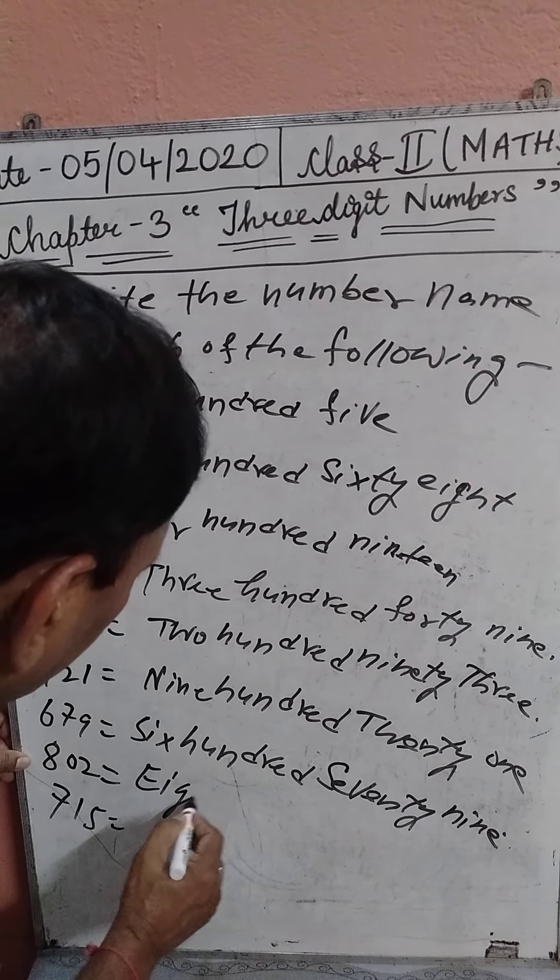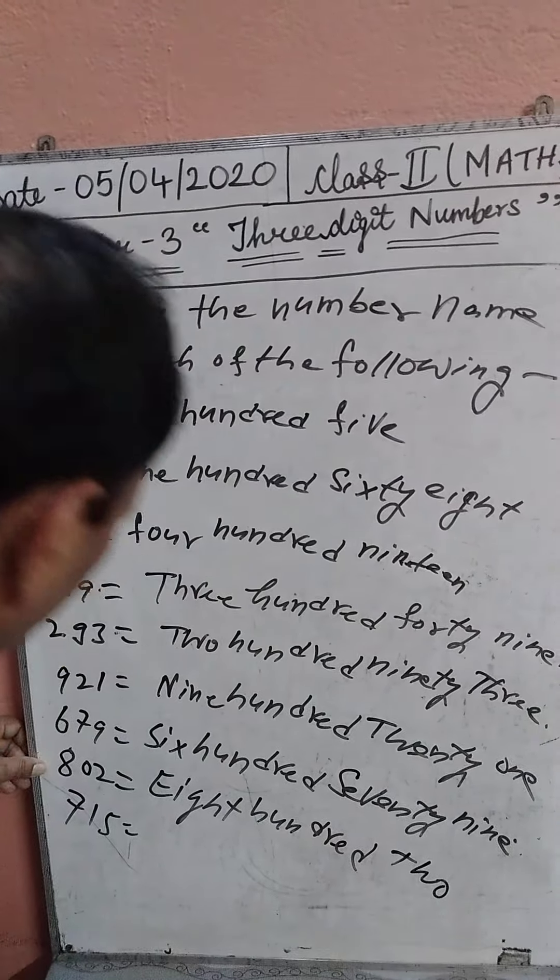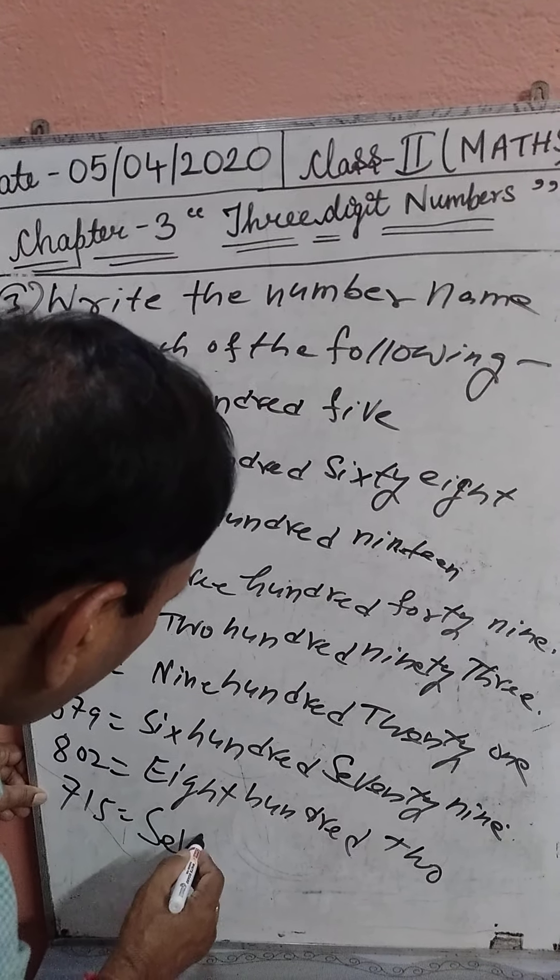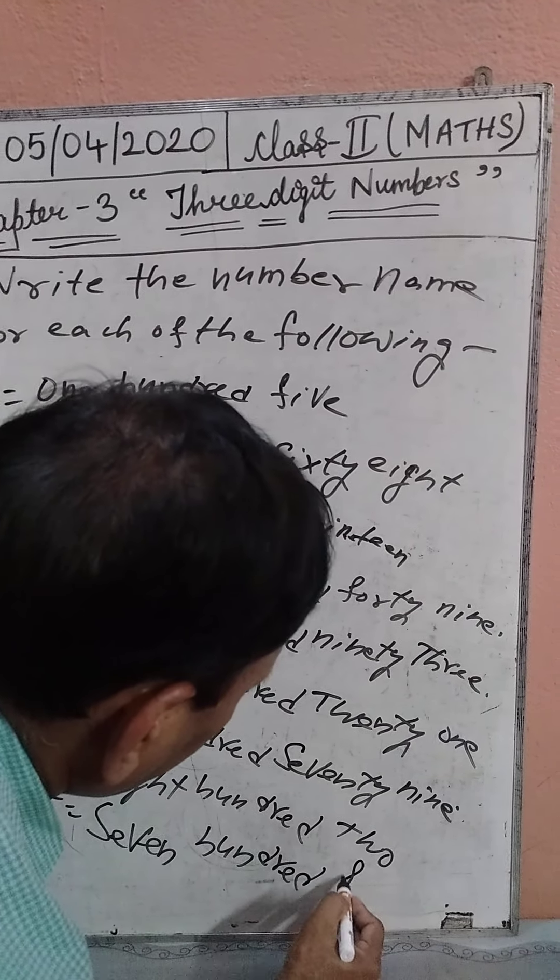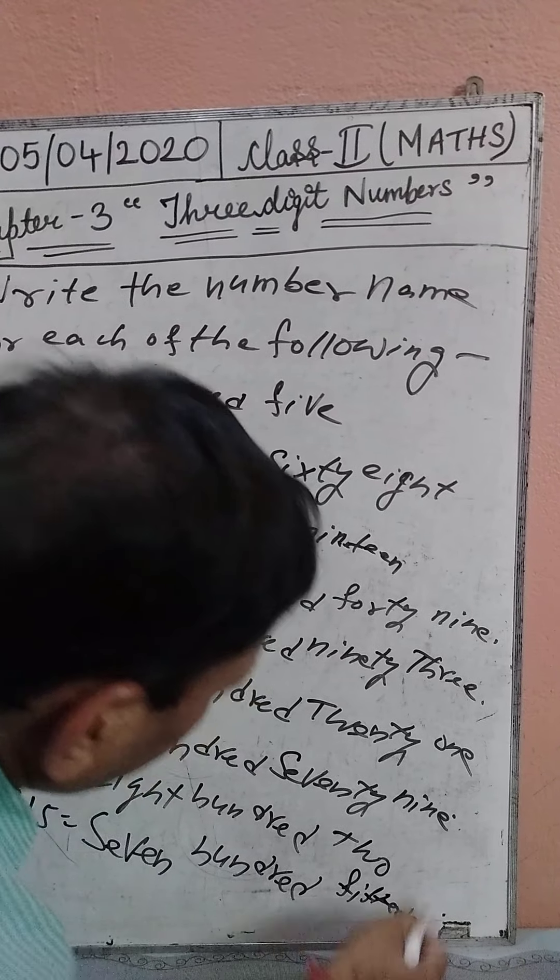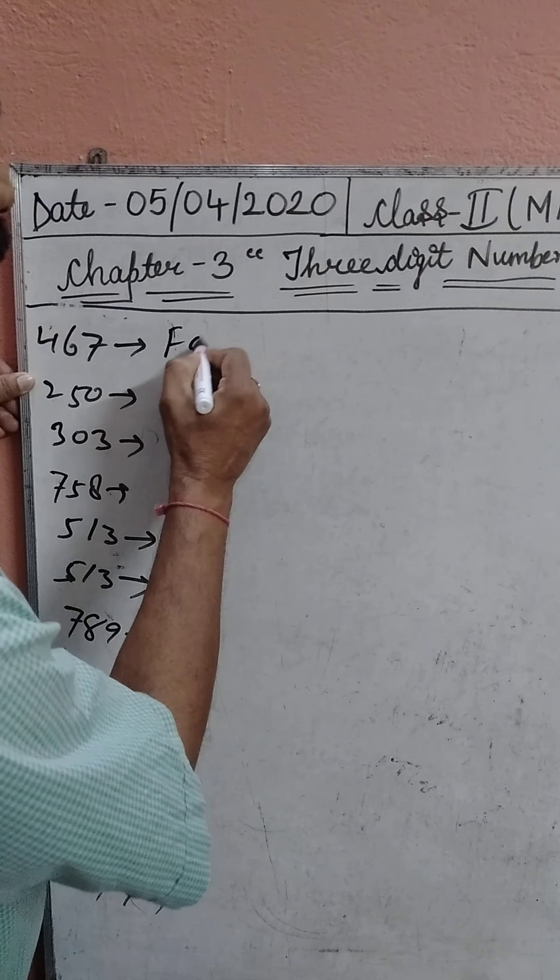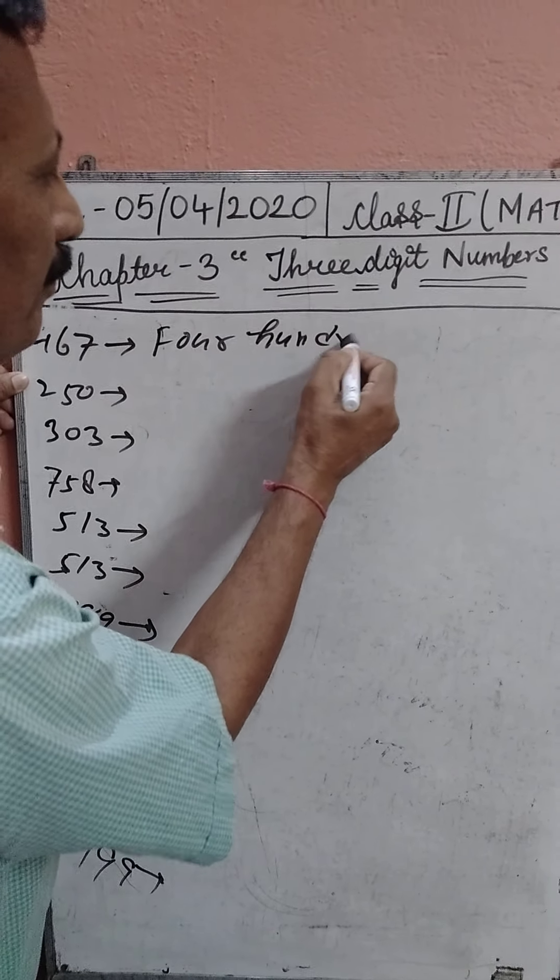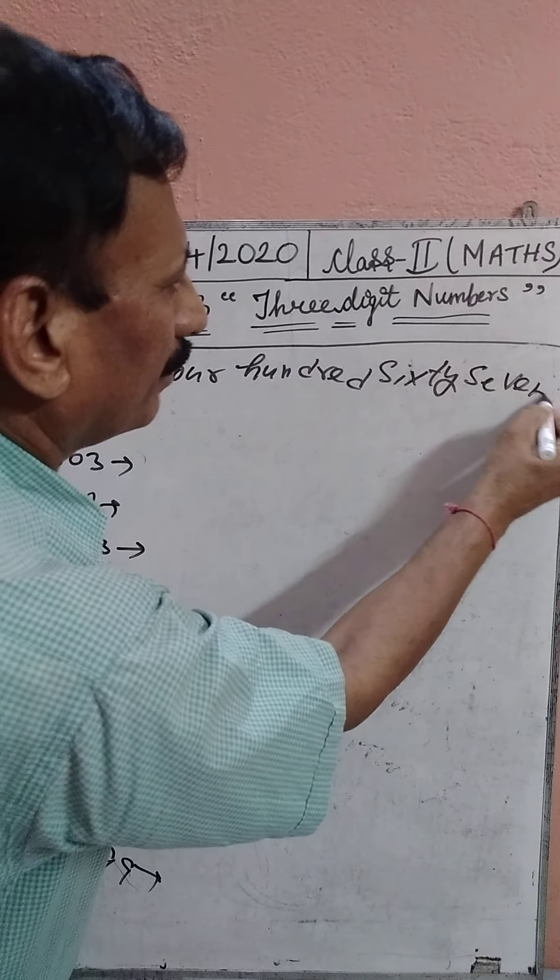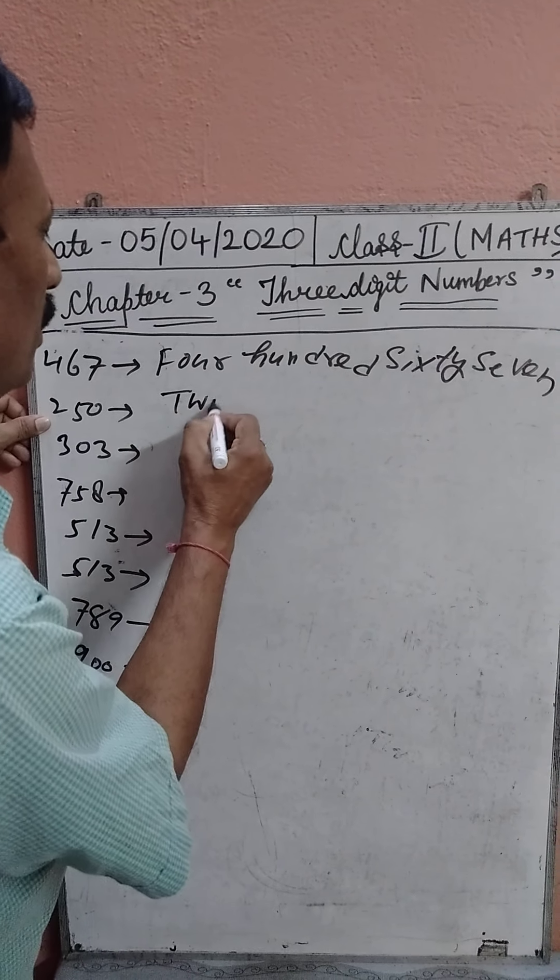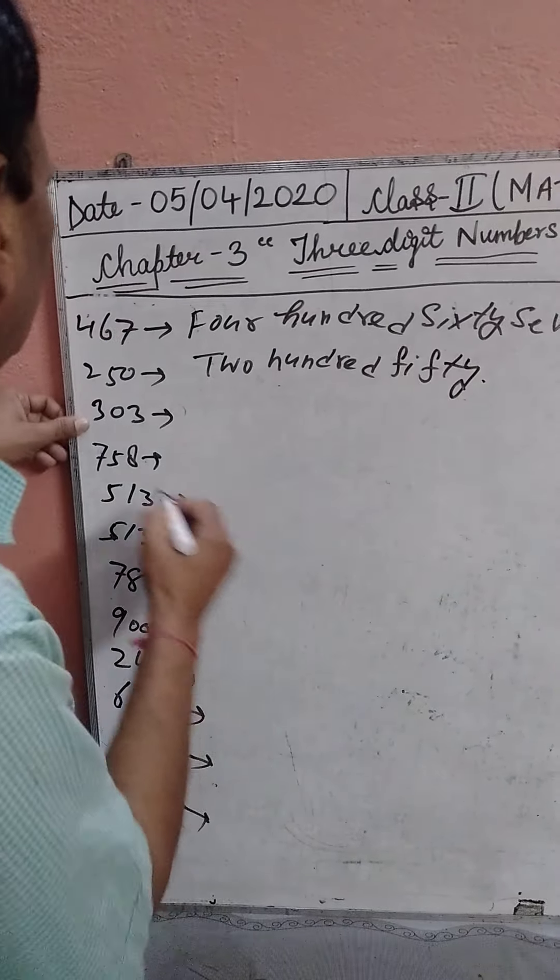Next, 802. Next, 715. Children, 467: four hundred sixty-seven. 250: two hundred fifty.